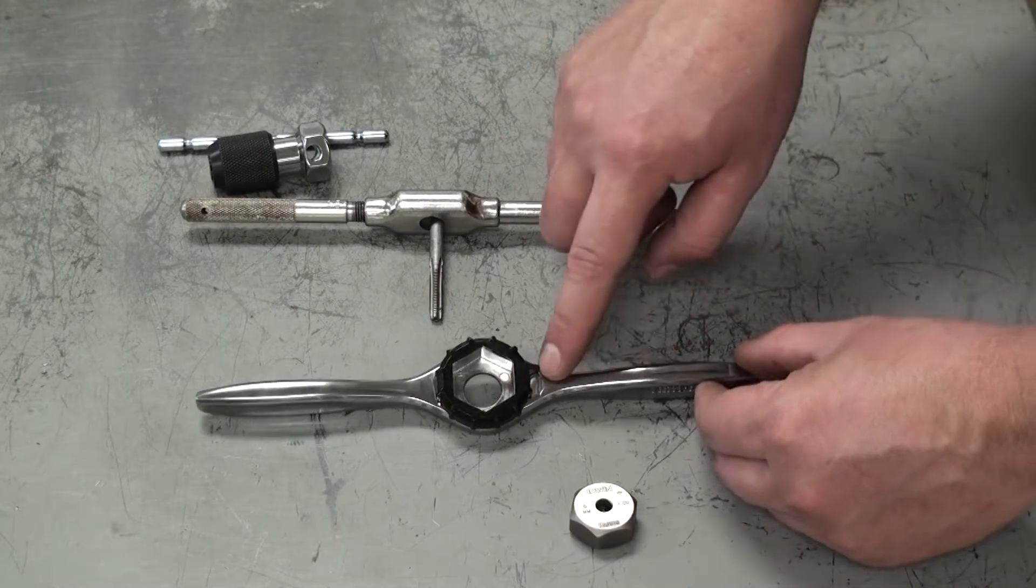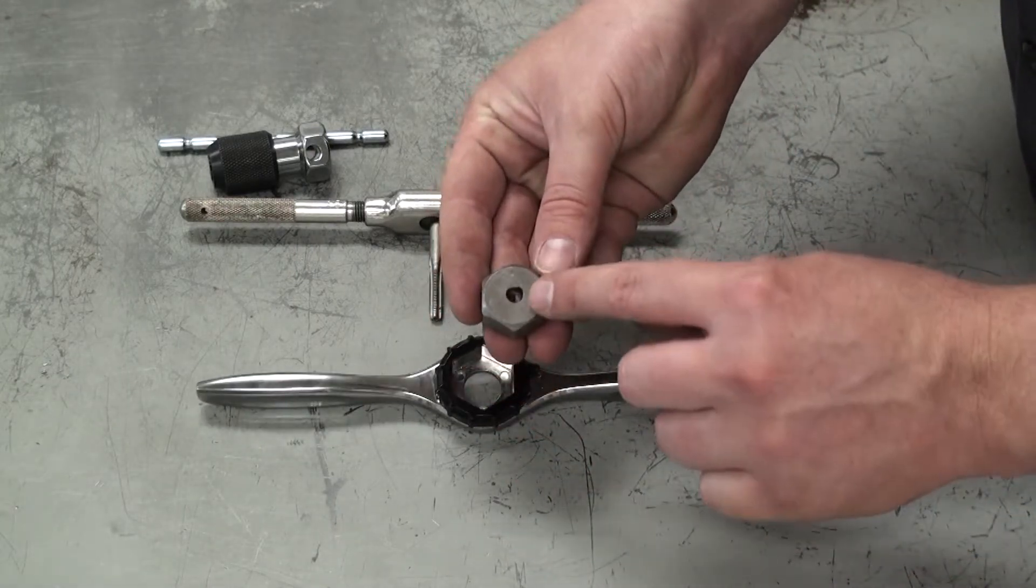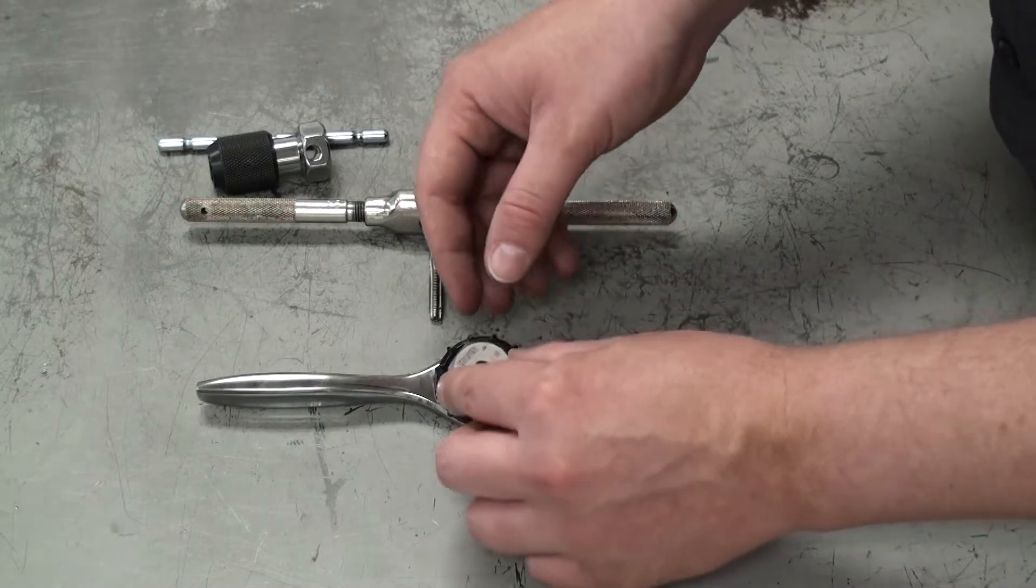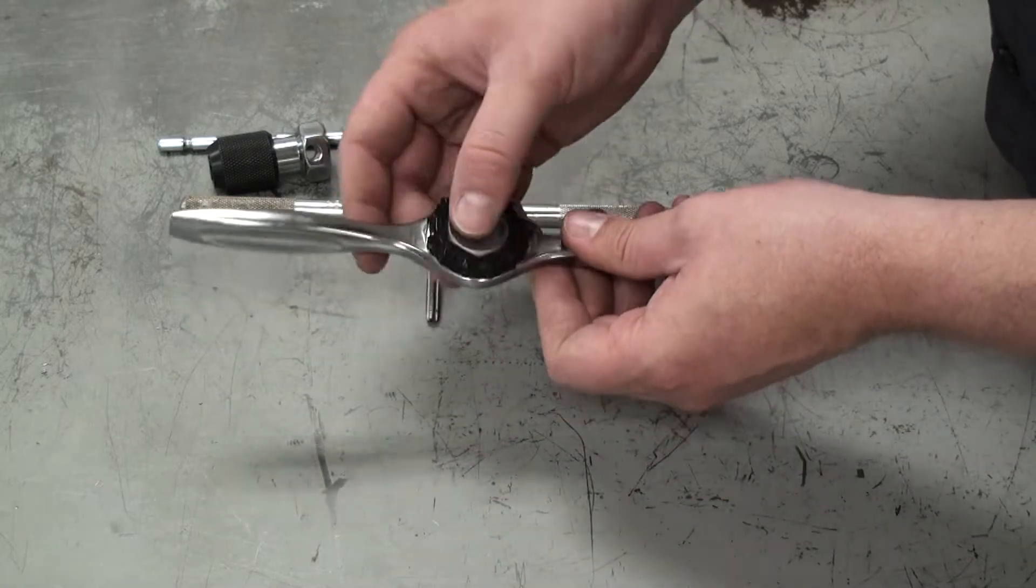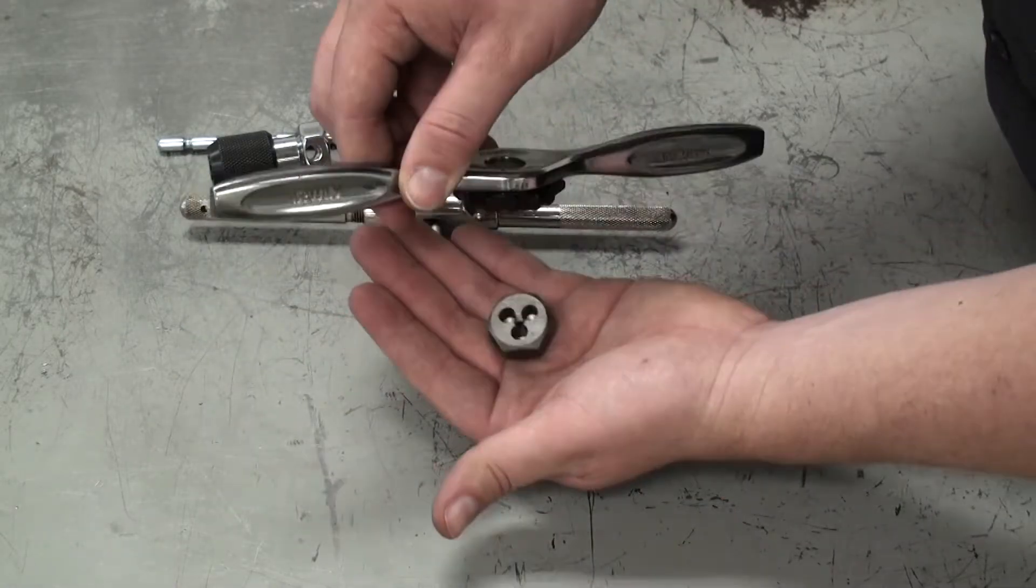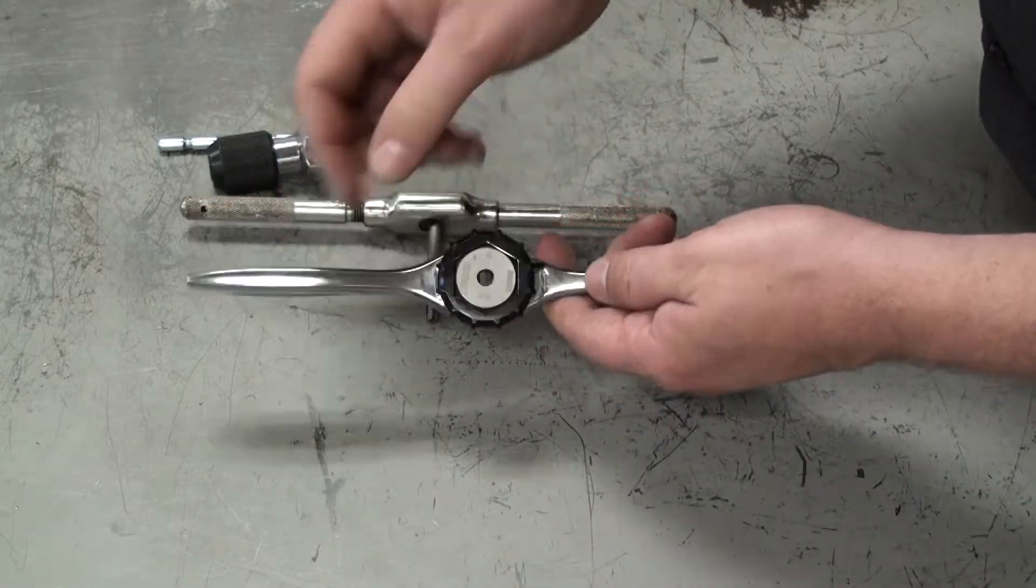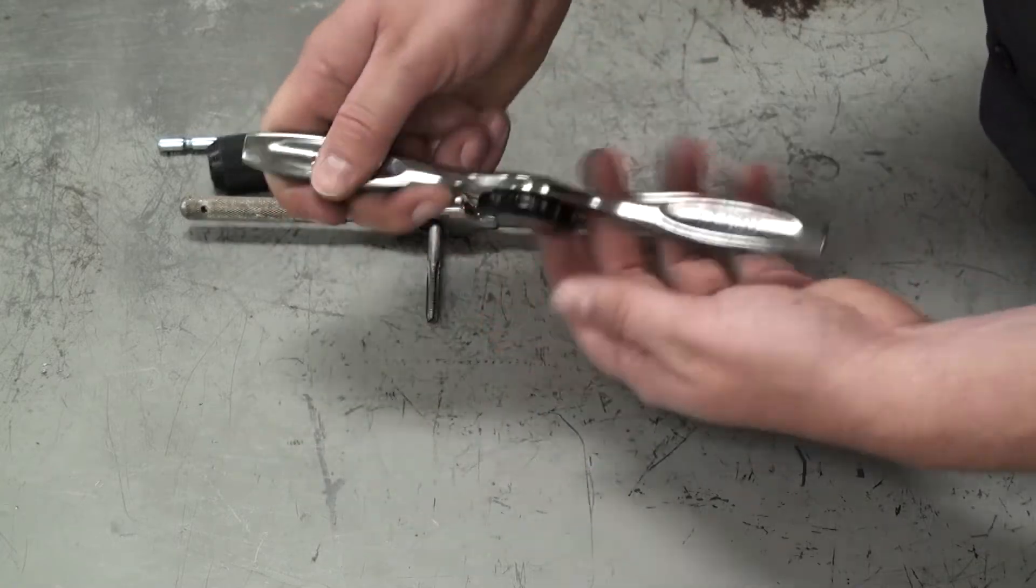Now we're going to look at the handle for the die. The die is going to have a tapered hole. One end is going to be a little bit larger and the other end is going to be the final diameter you need. You want to make sure that the larger hole is facing outward in the tool. You want to make sure that the die doesn't fall out, so all you need to do is turn the outer ring of the tool to clamp the die in. Once you have that turned and it's clamped, you're ready to work.